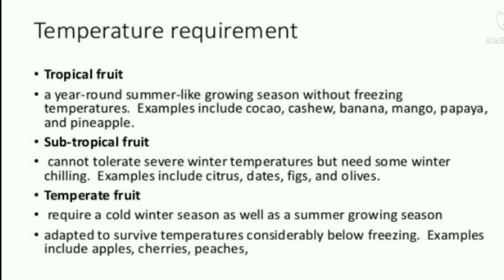Temperature requirements for different types of fruit. Tropical fruit: requires a year-round summer-like growing season without freezing temperatures; examples include cocoa, cashew, banana, mango, and pineapple. Subtropical fruit: cannot tolerate severe winter temperatures but needs some winter chilling; examples include citrus, dates, figs, and olives. Temperate fruit: requires a cold winter season as well as a summer growing season, adapted to survive temperatures considerably below freezing; examples include apple, cherries, and peaches.